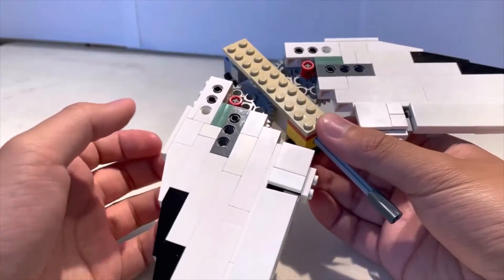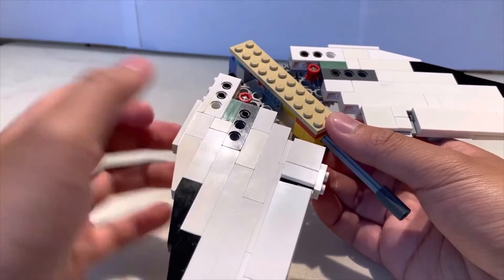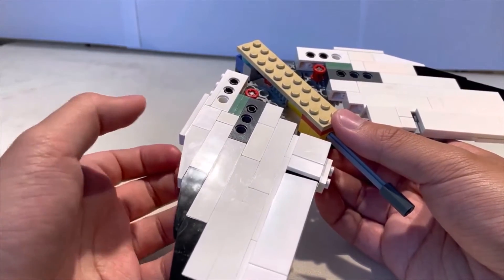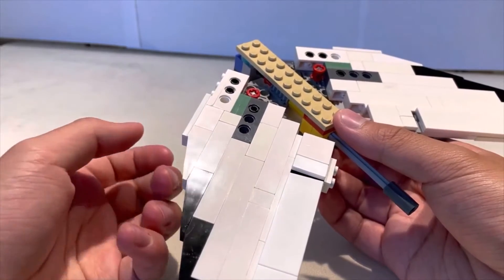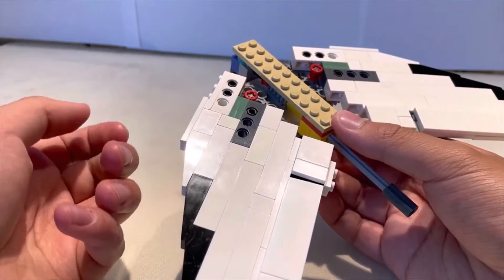Another major design feature is that I switched from using plates for the wings to using bricks. So now I'm using the SNOT technique—studs not on top.